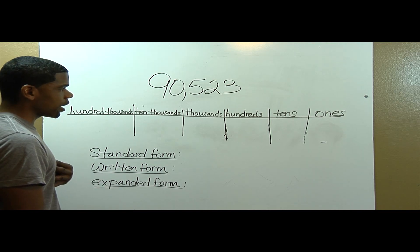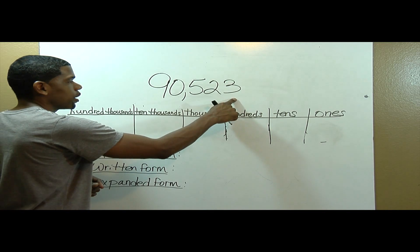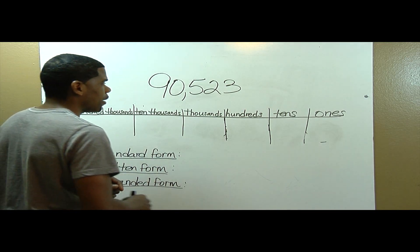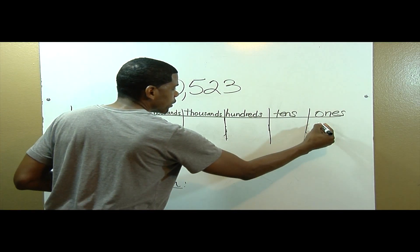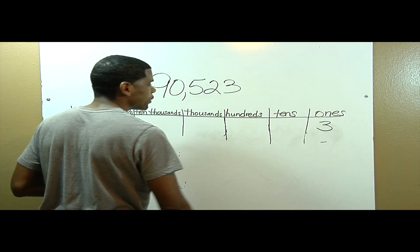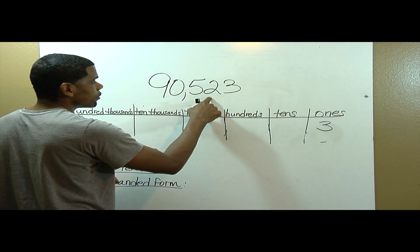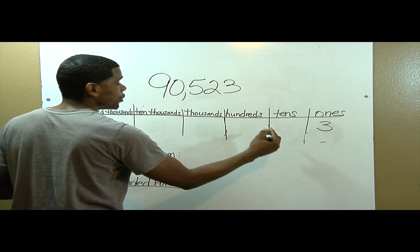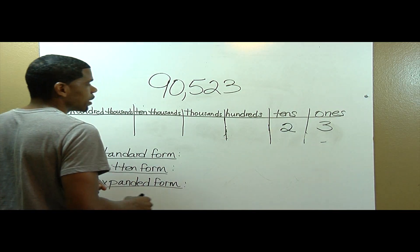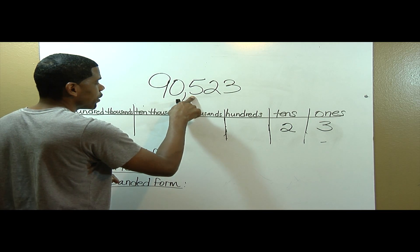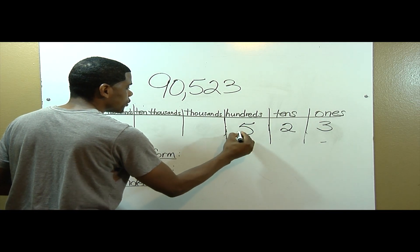The first thing I will do using my place value chart is start in the ones place. I will find out how many ones I have. I have three, so I'll put three in the ones place. How many tens do I have? I have two, so I'll write two in the tens place. How many hundreds do I have? I have five, so I'll write five in the hundreds place.